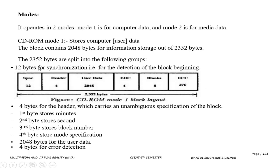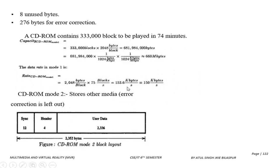Looking individually at each portion: 12 bytes for synchronization, used for detecting the beginning of a block. 4 bytes for the header, which carries an unambiguous specification of the block — the 1st byte stores minutes, 2nd byte stores seconds, 3rd byte stores the block number, and 4th byte stores the mode specification. Then 2048 bytes for user data, 4 bytes for error detection, 8 unused bytes, and 276 bytes for error correction.